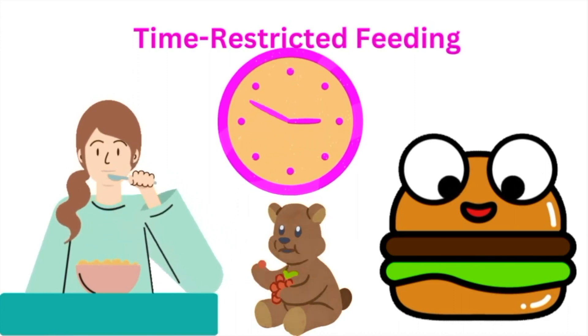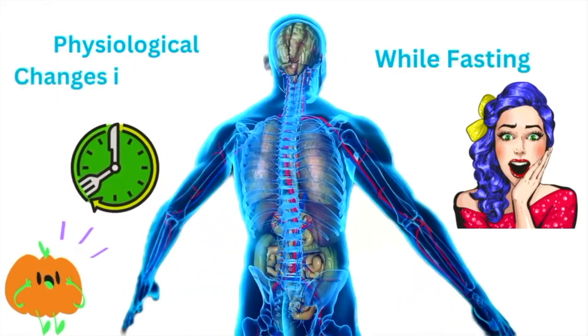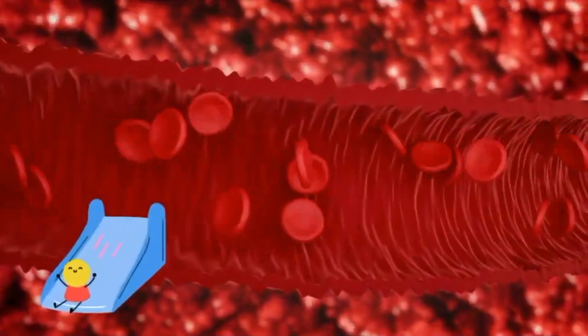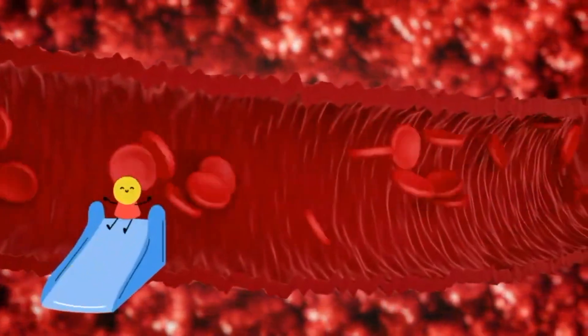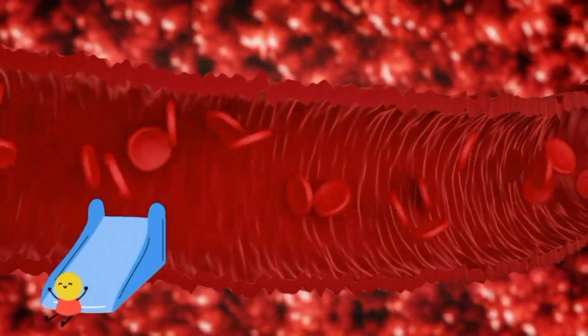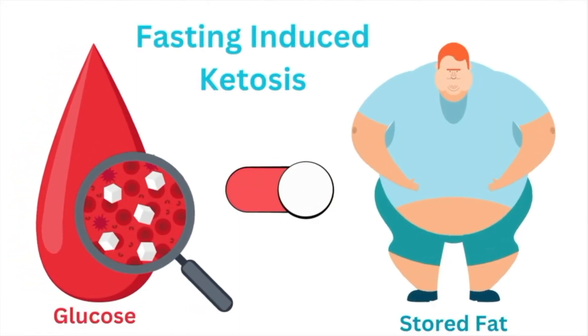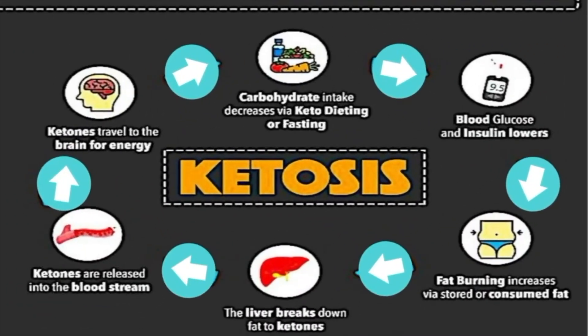During a fast, the body undergoes a number of physiological changes. The most notable of these is a decrease in blood glucose levels, which triggers the body to switch from using glucose as its primary source of energy to using stored fat instead. This process, known as ketosis,